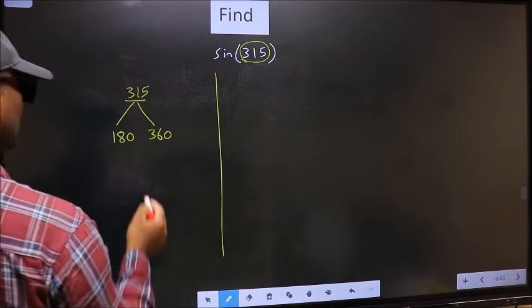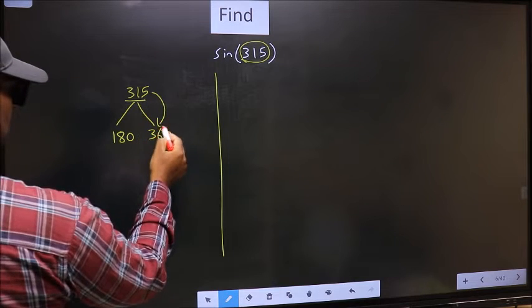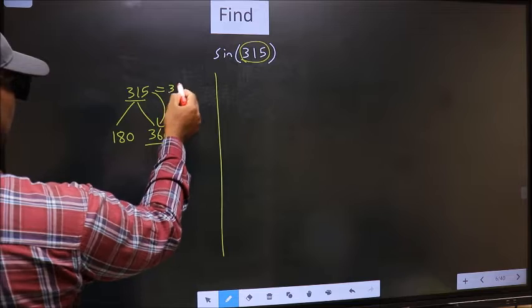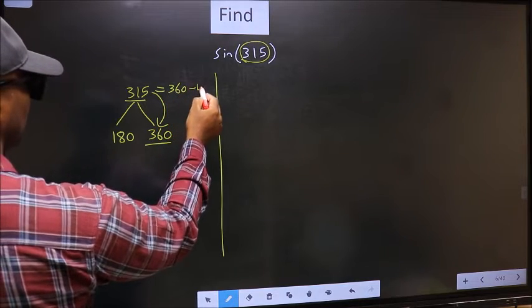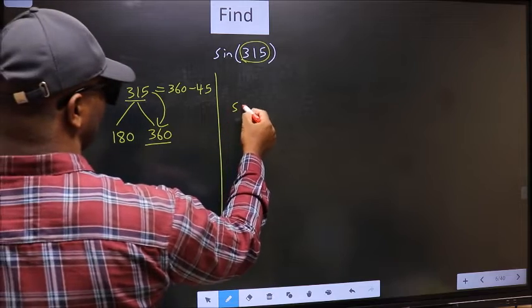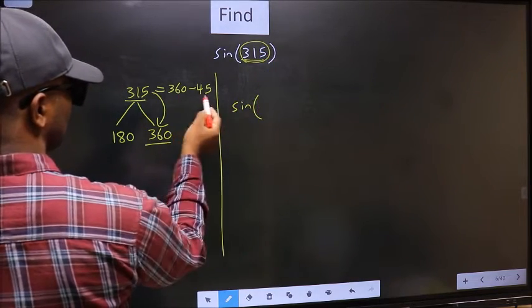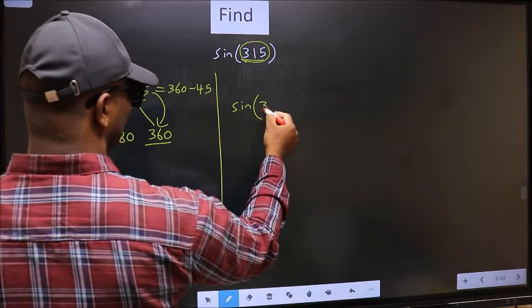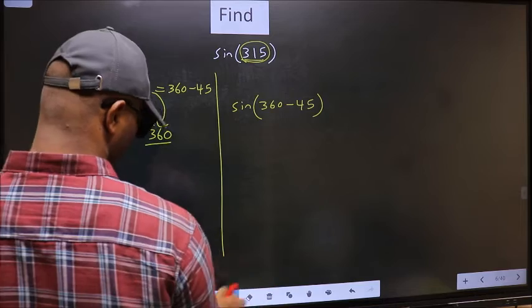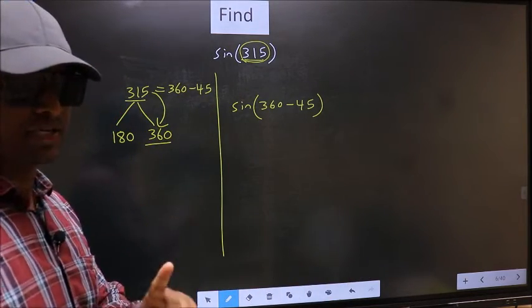Next, this number is close to which number? This is close to 360. So 315 should now be written as 360 minus 45. So this will become sin. In place of 315, we should write 360 minus 45. This is your step 1.